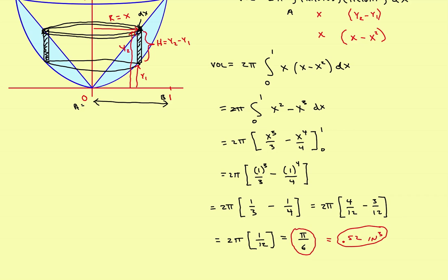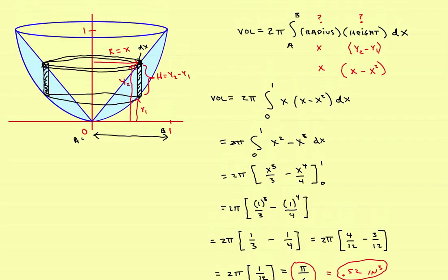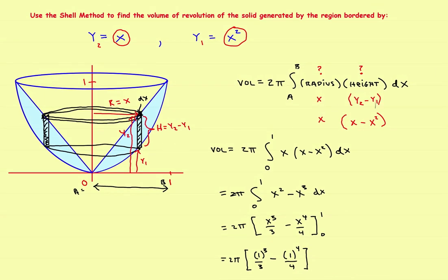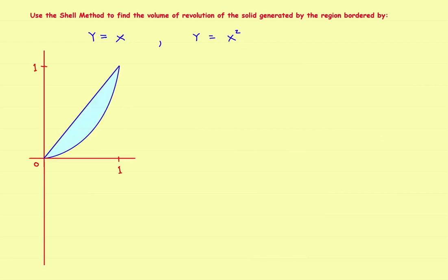So that's how to do one going around the y-axis. The key is: if you're going around the y-axis, put everything in terms of x. You look at your figure and get y2, y1, and the radius from the picture. It's important to draw the shell, because otherwise you won't know how to express these two things as functions of x. Now let's look at exactly the same problem, but this time going around the x-axis.